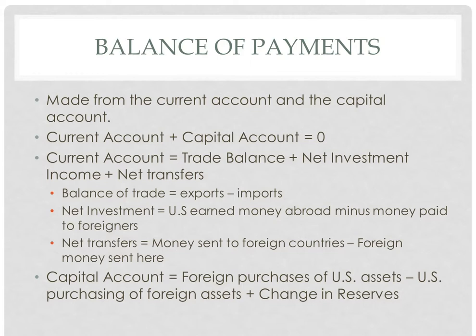The current account basically tells us where the money is going — to the U.S. or overseas. The capital account is the difference between foreign purchasing of U.S. assets and U.S. purchasing of foreign assets, plus the change in official reserves. The capital account basically measures the net change in asset ownership for a country. The most important thing you need to know for the AP test is that these two accounts sum to zero. They may give you a sample table with the current account and ask you to calculate the capital account, so remember these two always add up to zero.